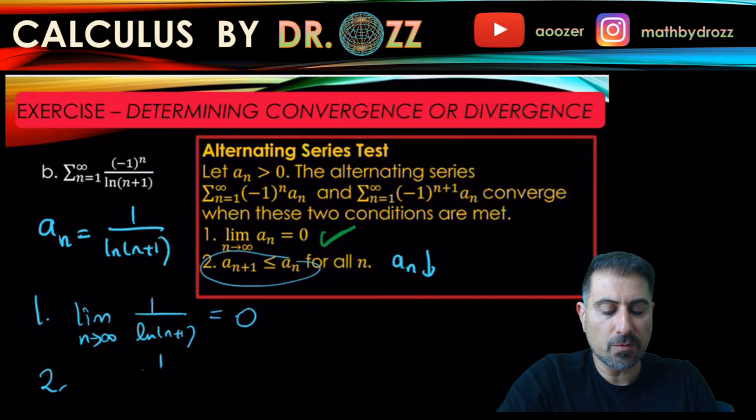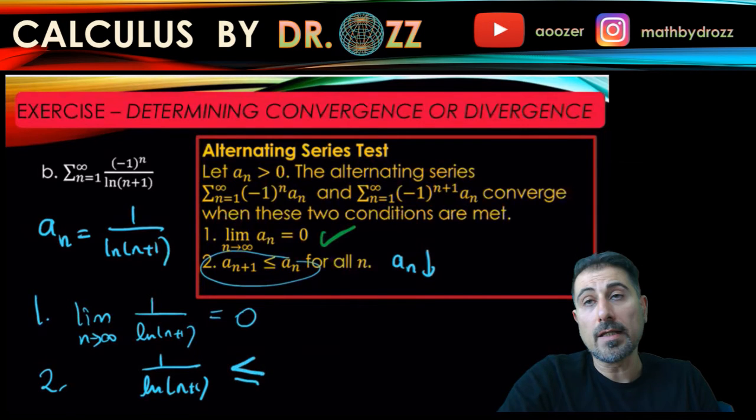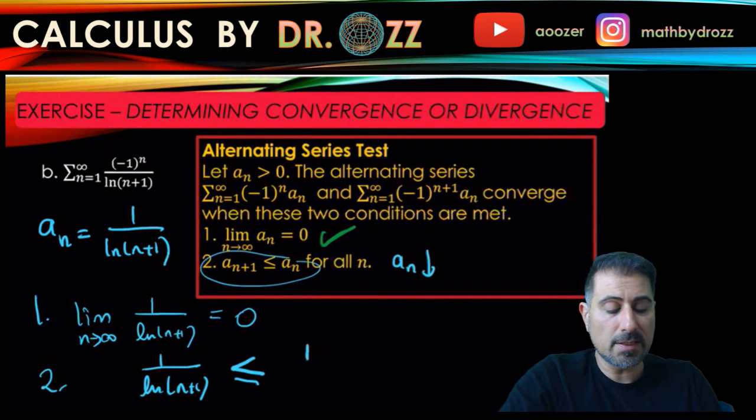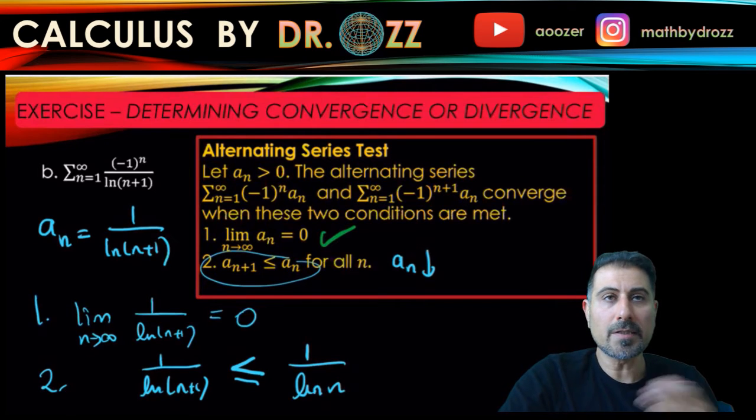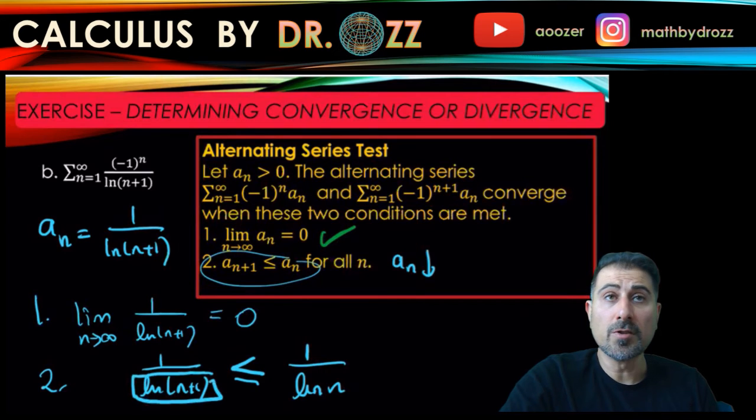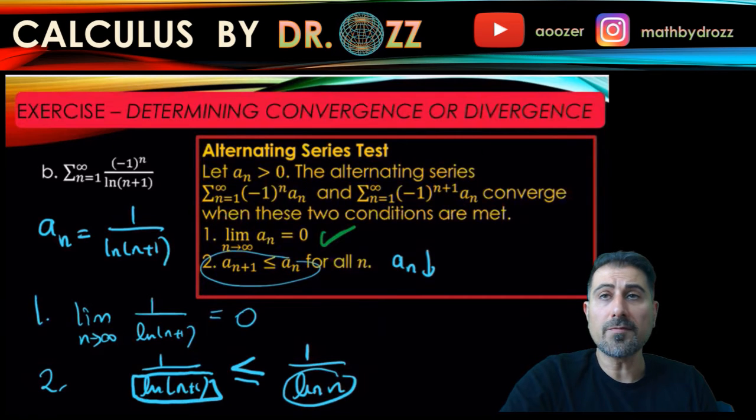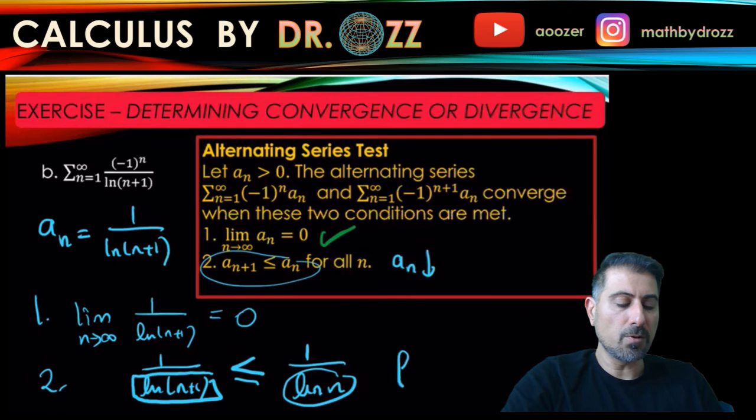a_{n+1} is 1 over ln(n+1). Is it true that we have 1 over ln(n+1) is less than 1 over ln(n)? Well, it's true because that's what I just said a few seconds ago. ln is an increasing function. So this is the ln of a bigger value. So it's going to be bigger than ln(n). So 1 over a bigger number on the left is going to be less than 1 over a smaller number. So this holds true for all n in fact.